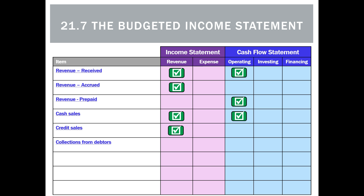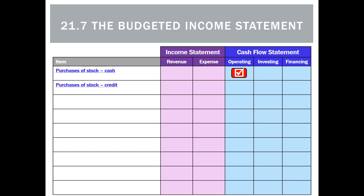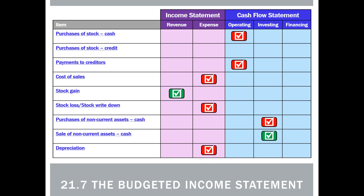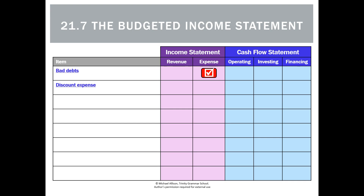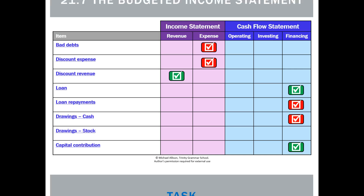A credit sale is a revenue but not an operating activity. Collecting money from debtors is not a revenue but will be an operating activity. There are many such transactions, and it's important to remember the impact of each on both the income statement and the cash flow statement. Budgeting is no different — we're simply predicting the future, and the impact of each transaction is identical. It's all about allocating it to the correct report.